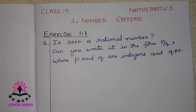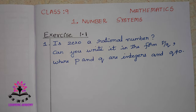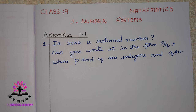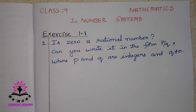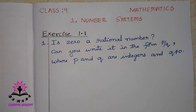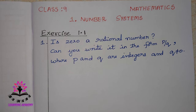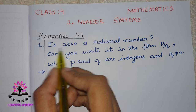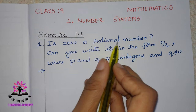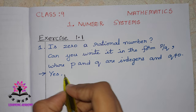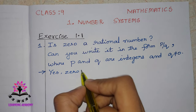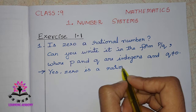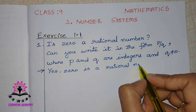The first question is: Is 0 a rational number? Can you write it in the form p by q, where p and q are integers and q is not equal to 0? The answer is yes, 0 is a rational number.